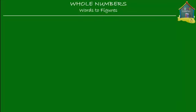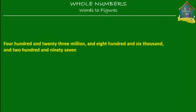Let me take this number: 423,800,6297. Okay, this is just one number — this whole thing is just one number. And we're going to find out how to express this in numerals or figures. So let's break up this number and handle it bit by bit.